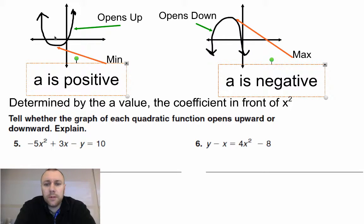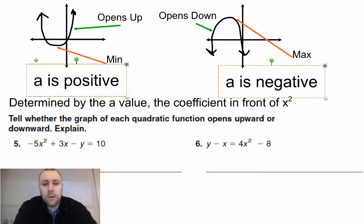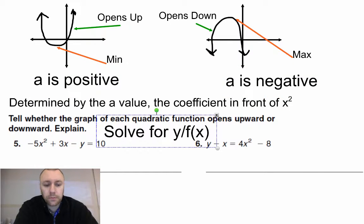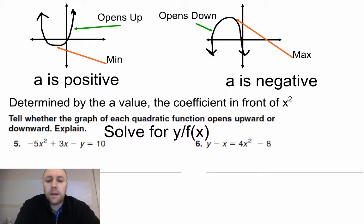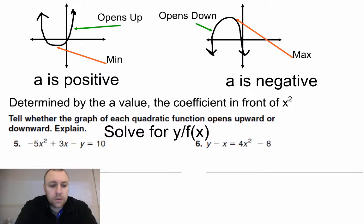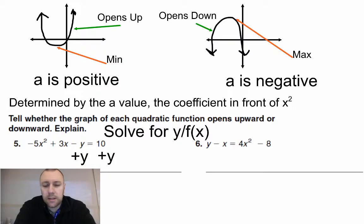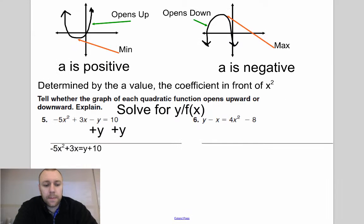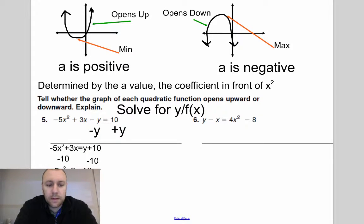For the two examples on the bottom, the first step is to solve for y or f(x), however it is written. For number five here, I'm going to add y on both sides because that's going to make it easier — get y positive — and I'm going to subtract the 10 to get my equation.